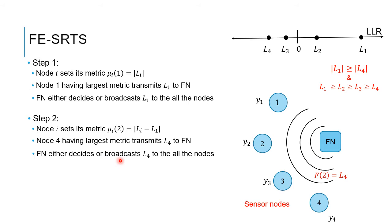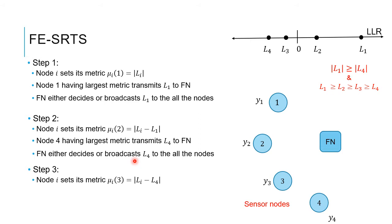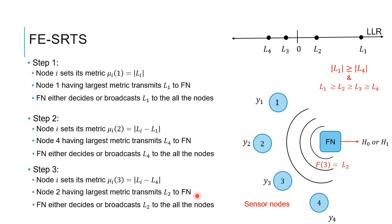The fusion node again tries to decide using L1 and L4. If it decides, the process terminates with a decision in two transmissions instead of four. If it does not decide, the fusion node broadcasts L4 to all nodes as feedback. Subsequently, in step 3, node i sets its metric as |Li − L4|. As a result, node 2 transmits L2 and the fusion node again tries to decide. The process continues until the fusion node decides.